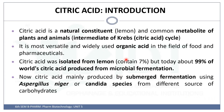Let's start with an introduction to citric acid. Citric acid is a natural constituent present in many fruits like lemons. It is also a common metabolite of plants and animals, as it is an intermediate product of the citric acid cycle. It is mainly used as an organic acid in the food and pharmaceutical industry. It can be isolated from natural sources like lemon, which contains 7% citric acid. However, 99% of the world's citric acid is produced by microbial fermentation, usually by submerged fermentation using Aspergillus niger or Candida species with different carbohydrate sources.